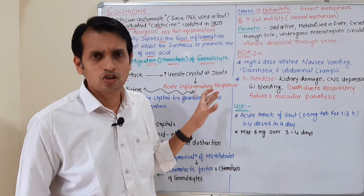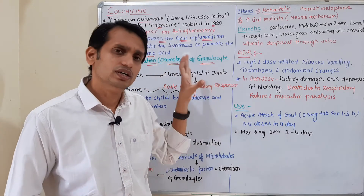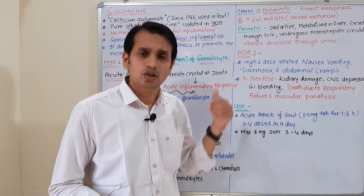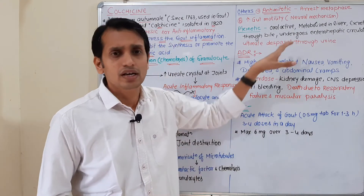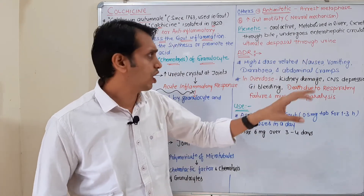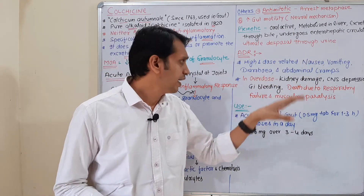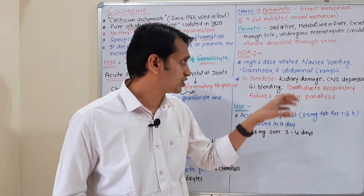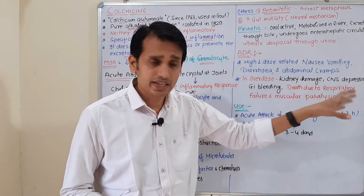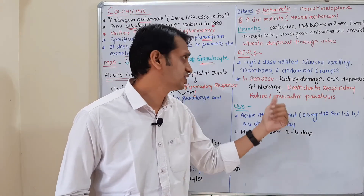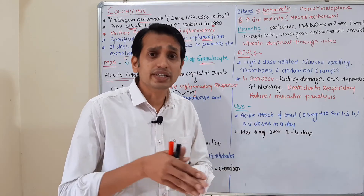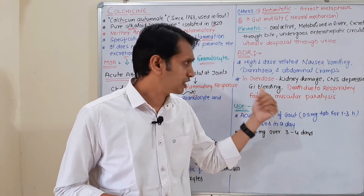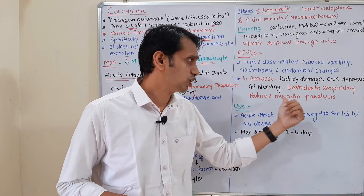Now the ADR or toxicity of colchicine: it shows dose-dependent nausea, vomiting, diarrhea, and abdominal cramps. In overdose, it may cause CNS depression, kidney damage, GI bleeding, and may even cause death due to respiratory failure, respiratory paralysis, and muscular paralysis.